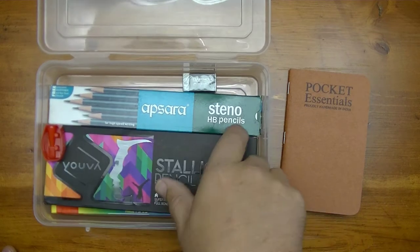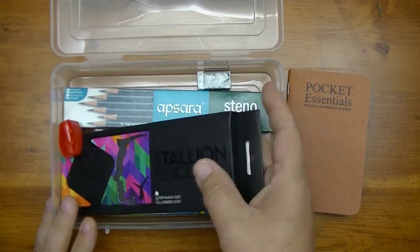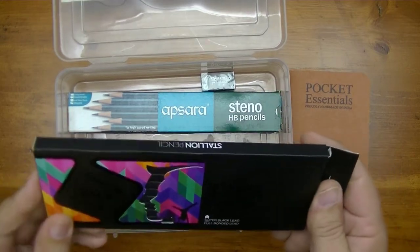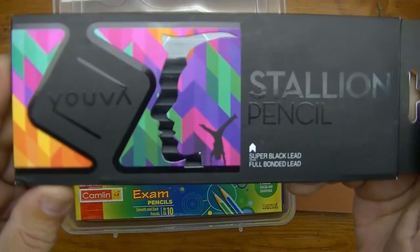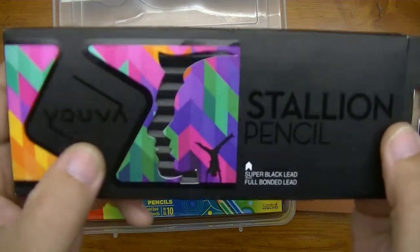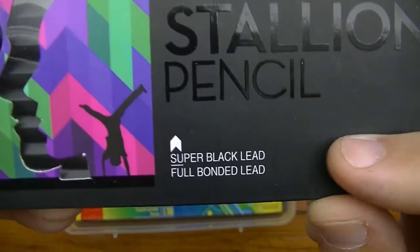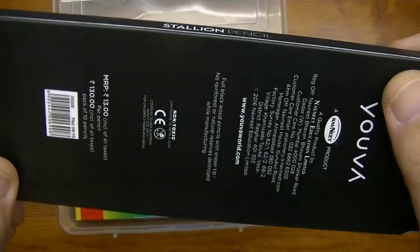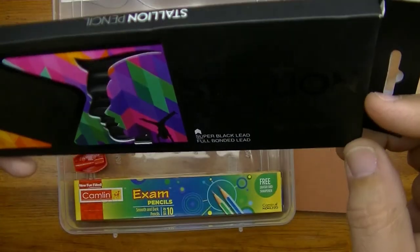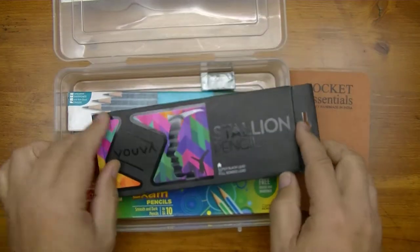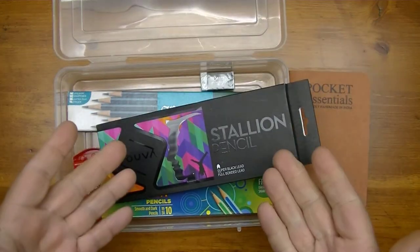What do we have here? We're going to take a look at today. It looks like it says Yuva Stallion pencil. It's a super black lead, full bonded lead set of pencils, so let's check it out.